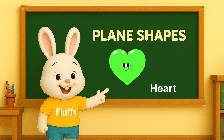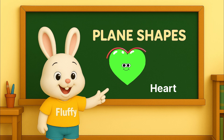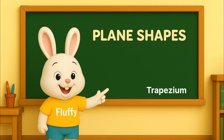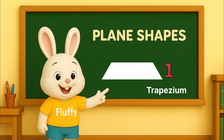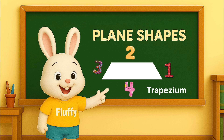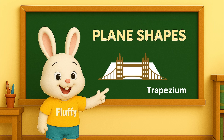Heart. A heart shape is curvy on both sides, but narrow and pointy at the bottom. Trapezium. A trapezium has four sides, but only one pair of sides is parallel, like a bridge.